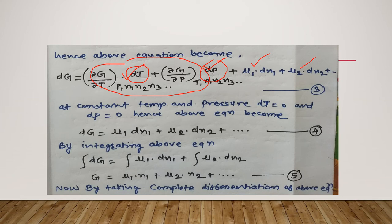If we now take the integration of equation number 4, the integration and derivative cancel each other, and we get G = μ1·N1 plus μ2·N2, and so on for all components. This is equation number 5, and it is a very important equation. We now need to take the complete differentiation of equation number 5.